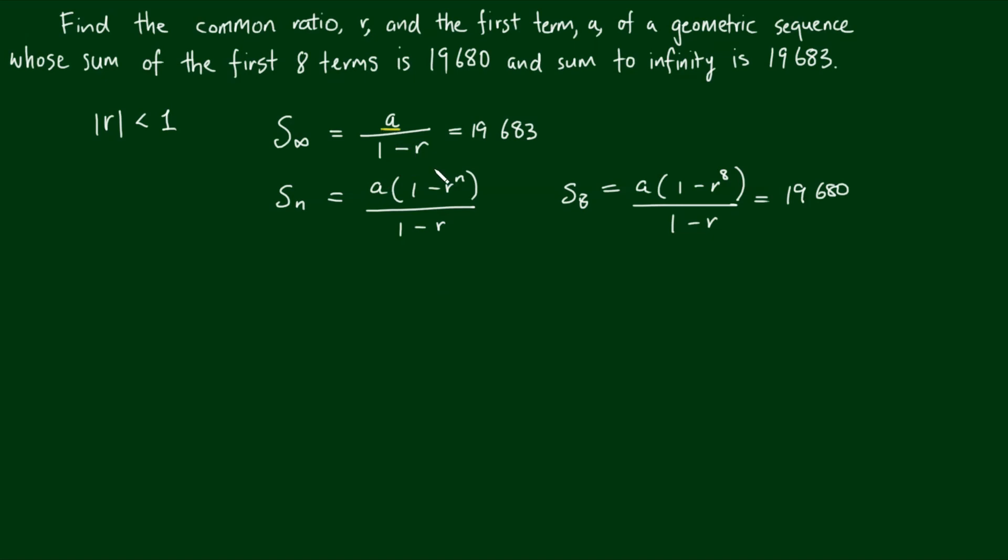We have a case here of two unknowns, a and r, and we have two equations. What I'm going to do now is to write the sum of the first eight terms, s sub 8.